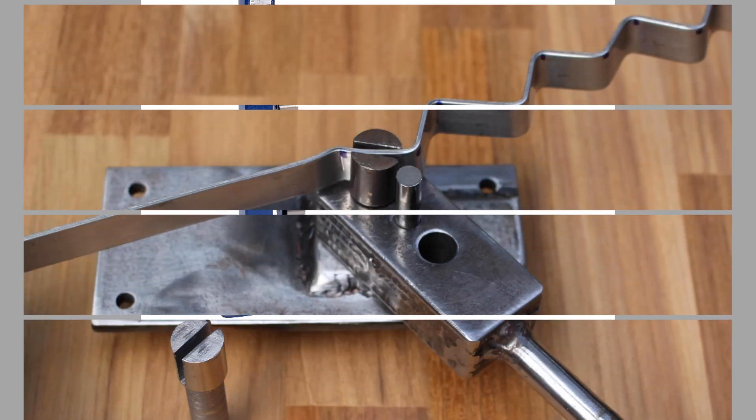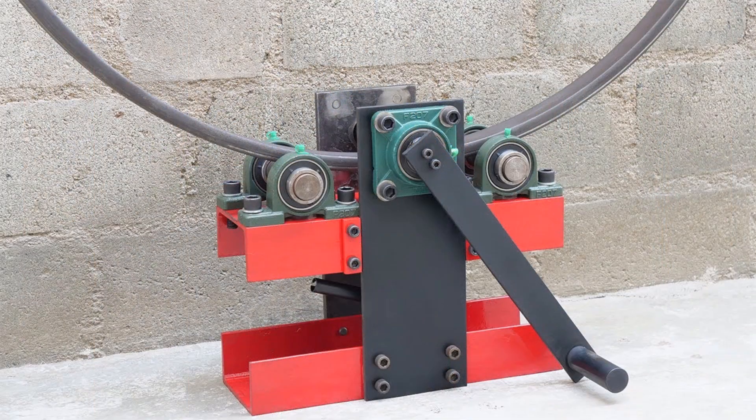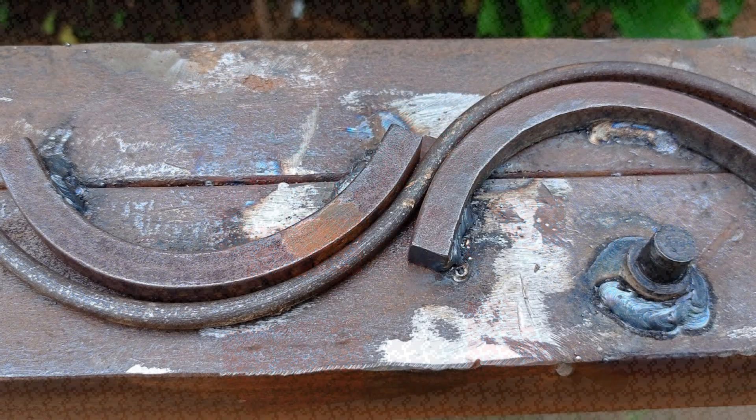Bending is a manufacturing process that produces a V-shape, U-shape, or channel shape along a straight axis in ductile materials, most commonly metals.